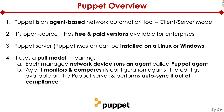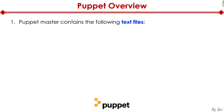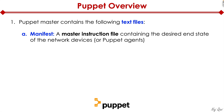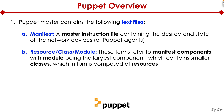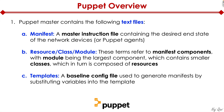When the Puppet agent finds itself out of compliance, it automatically synchronizes itself by pulling the config. Once you're done installing the Puppet master or Puppet server, it contains the following text files: a manifest, which is the master instruction file containing the desired end state of the network endpoint or Puppet agents. Then there's resource, class, or module — these terms refer to manifest components, with module being the largest, containing classes, which in turn contain resources. And finally, there are templates, which are baseline configs used to generate manifests by substituting variables into the template.